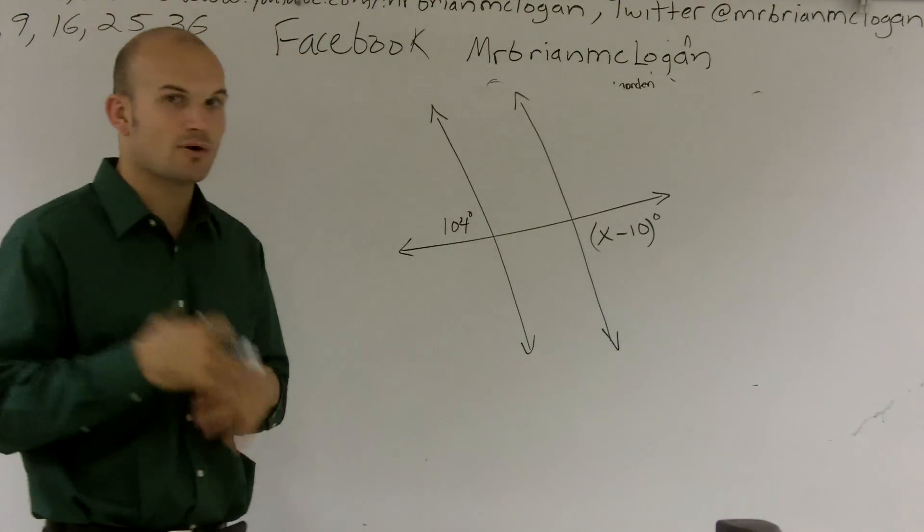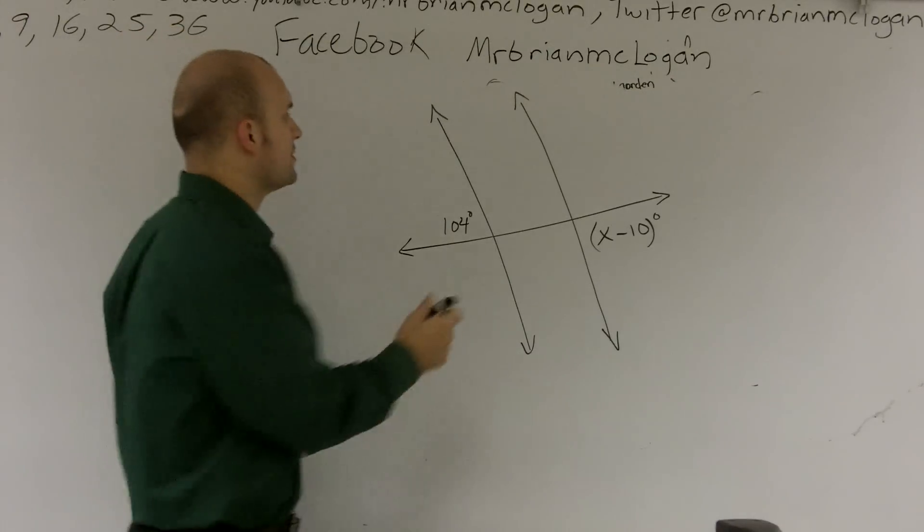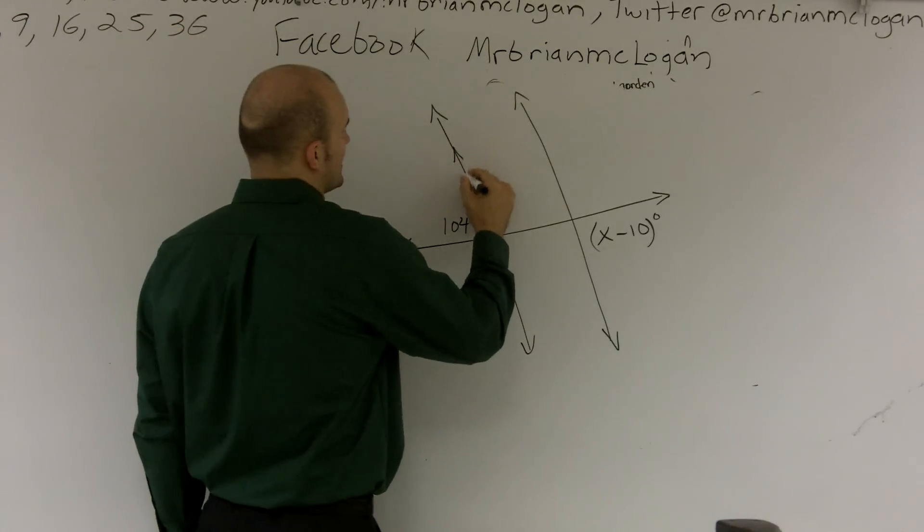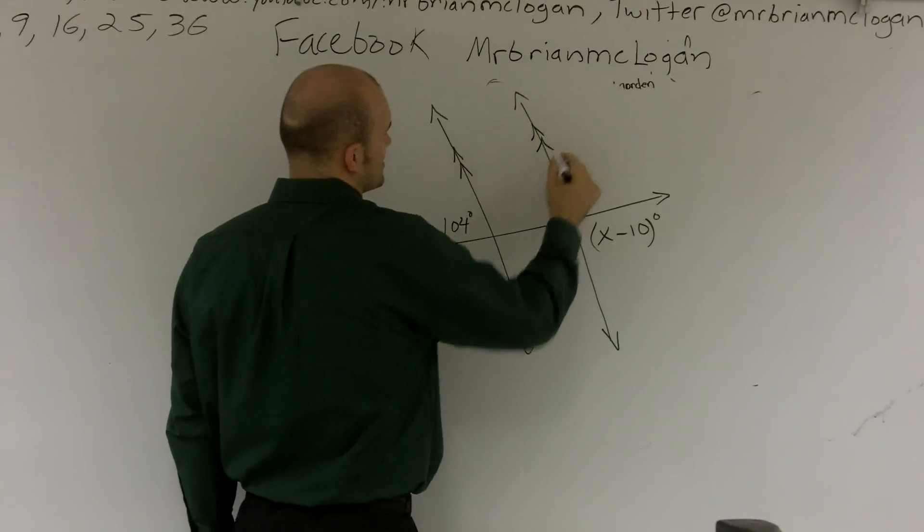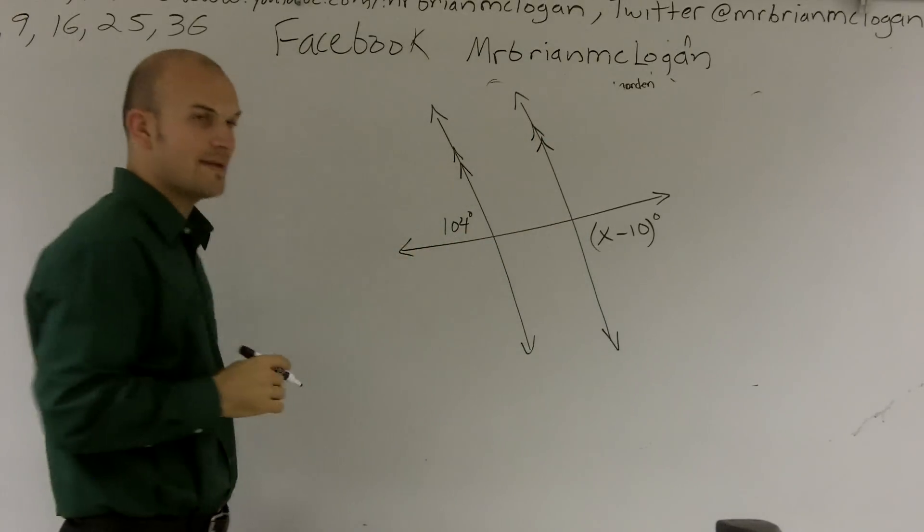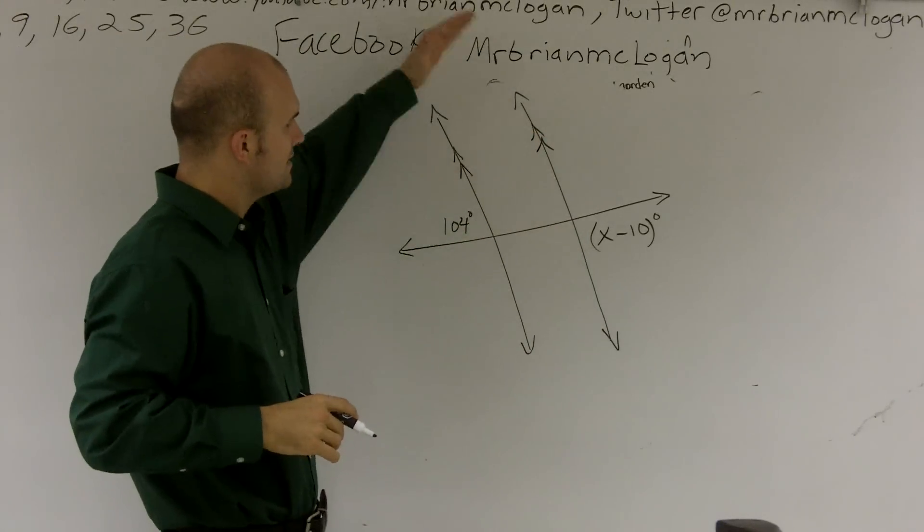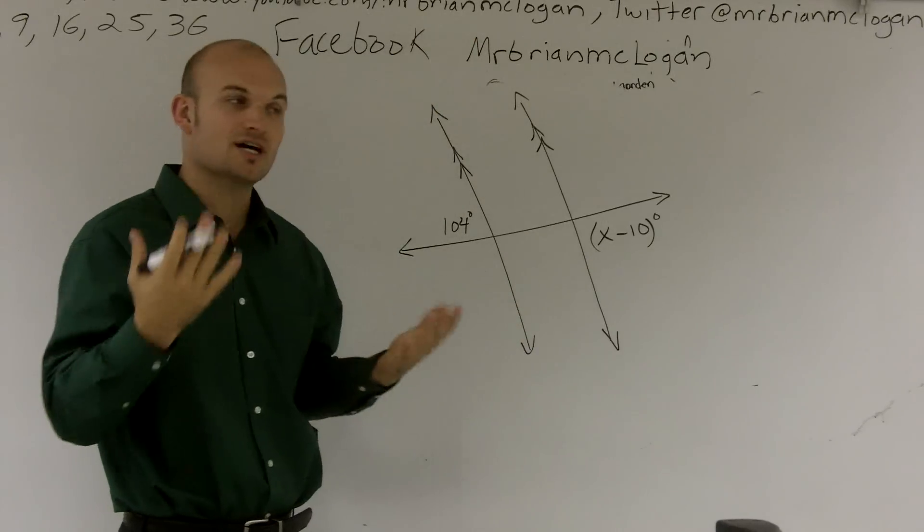So right now I don't have parallel lines. But when you're looking at a book or problem, you're going to want to make sure that you see the double arrows. That means that these are going to indefinitely continue in both directions without touching each other.